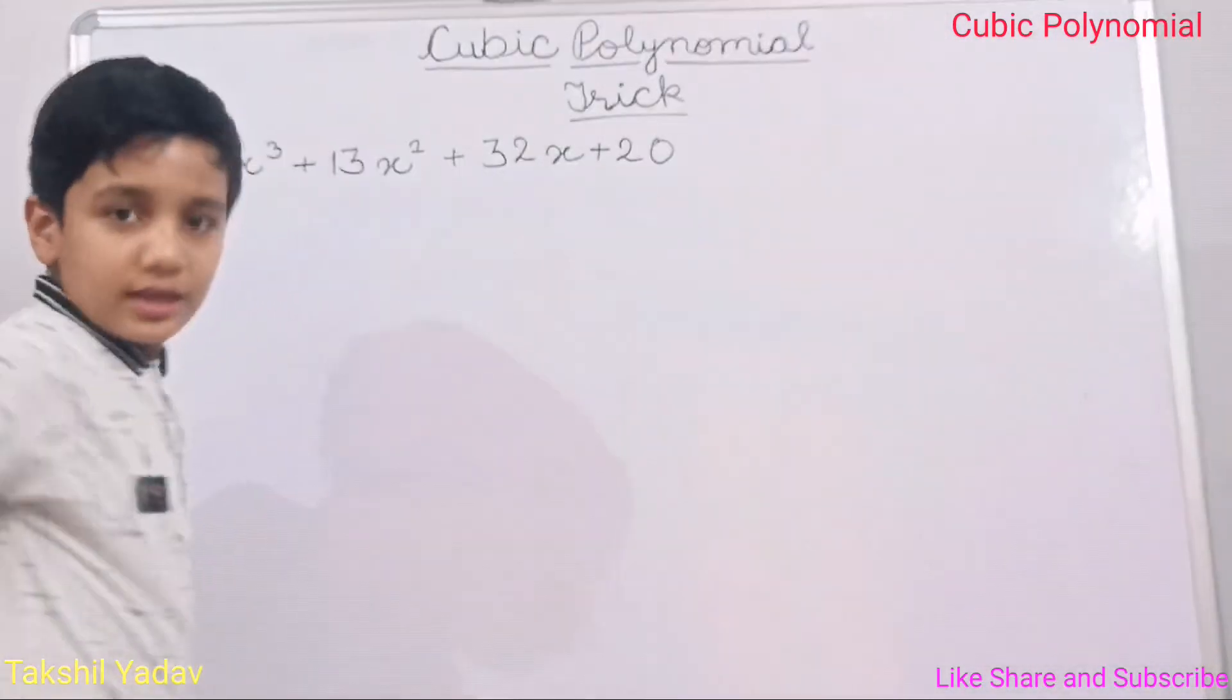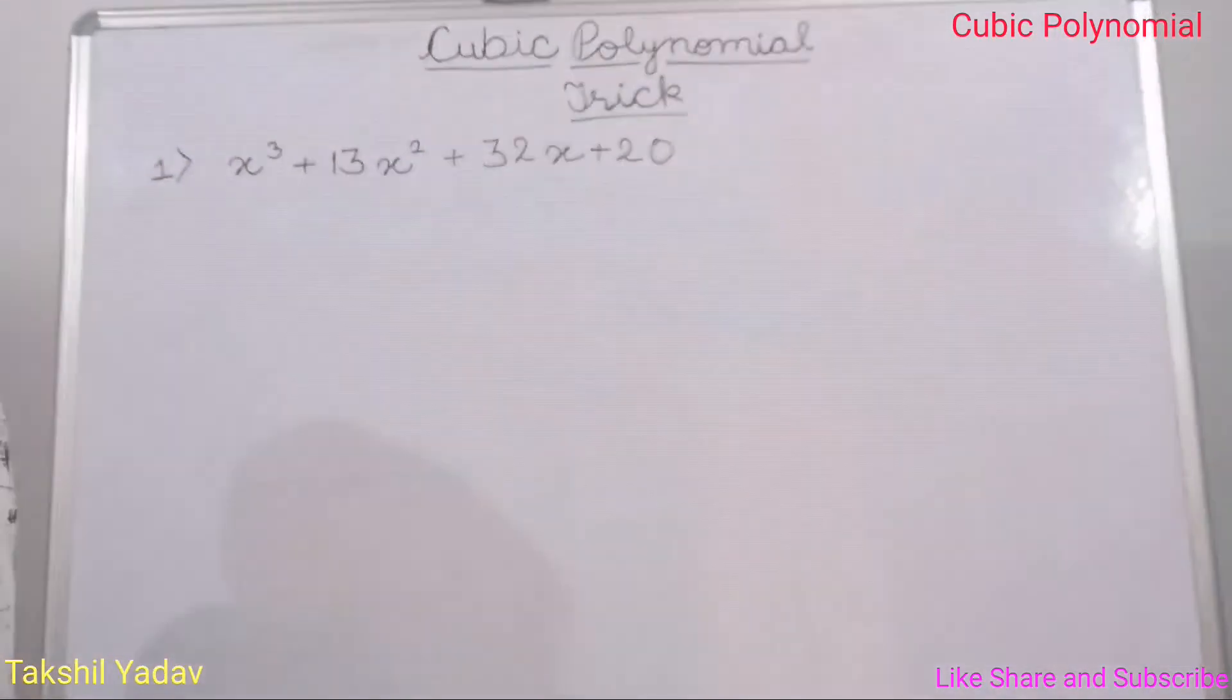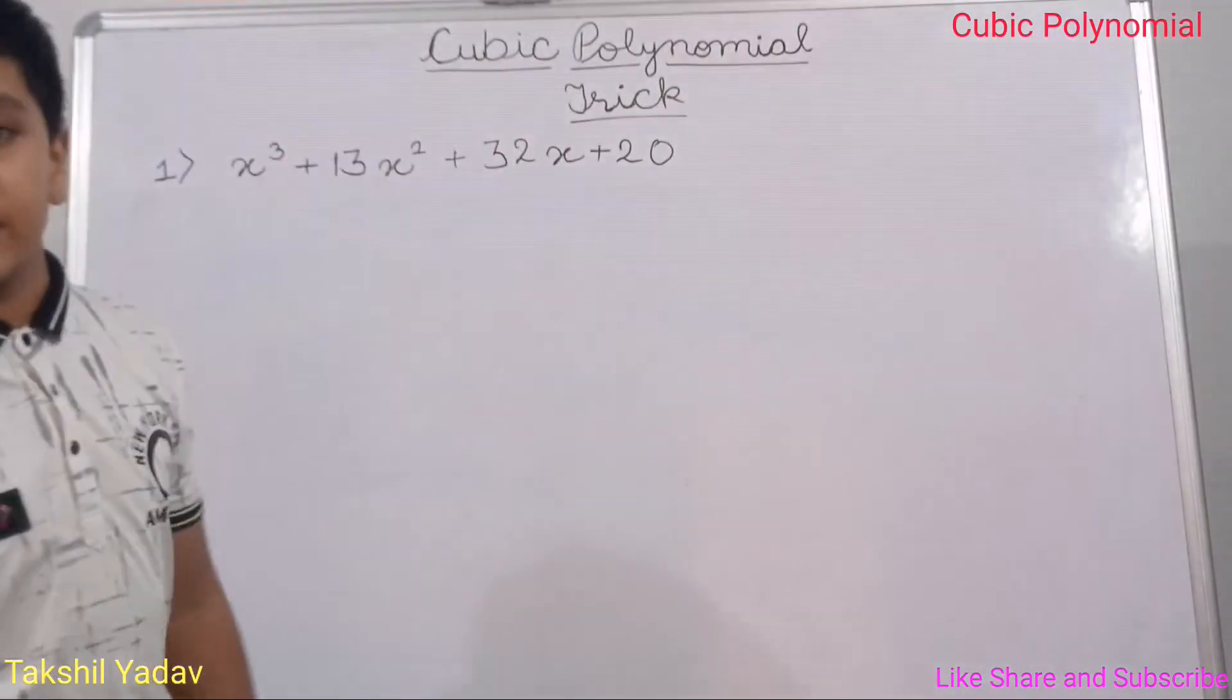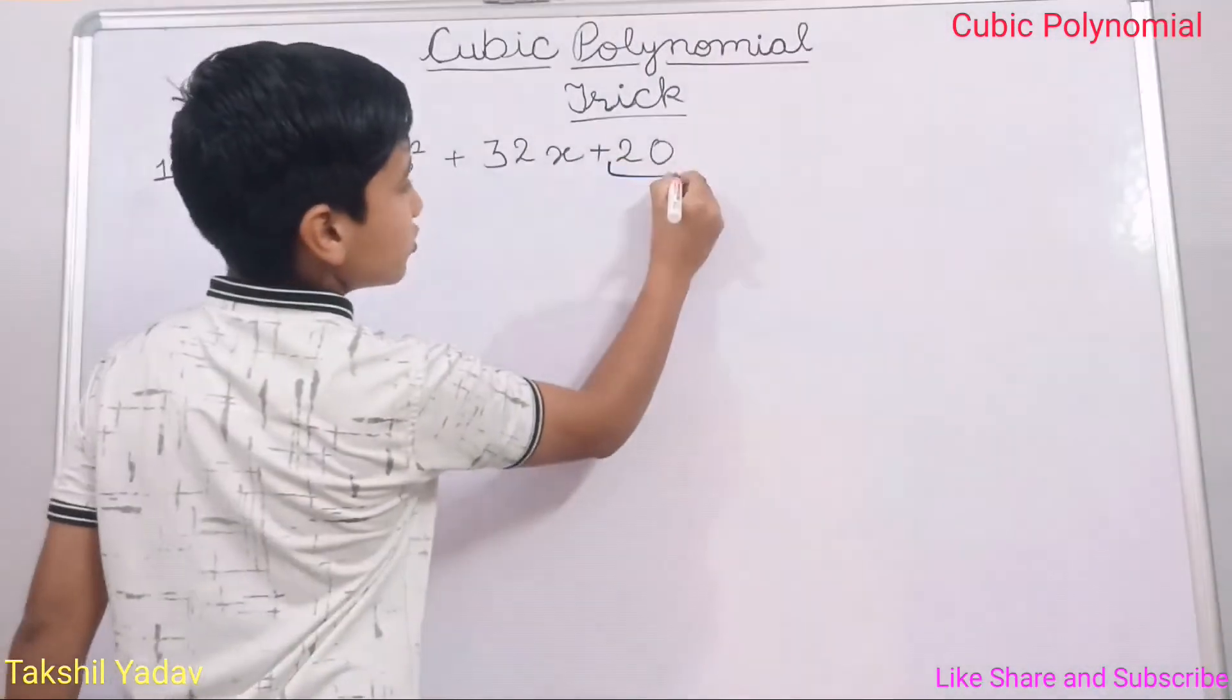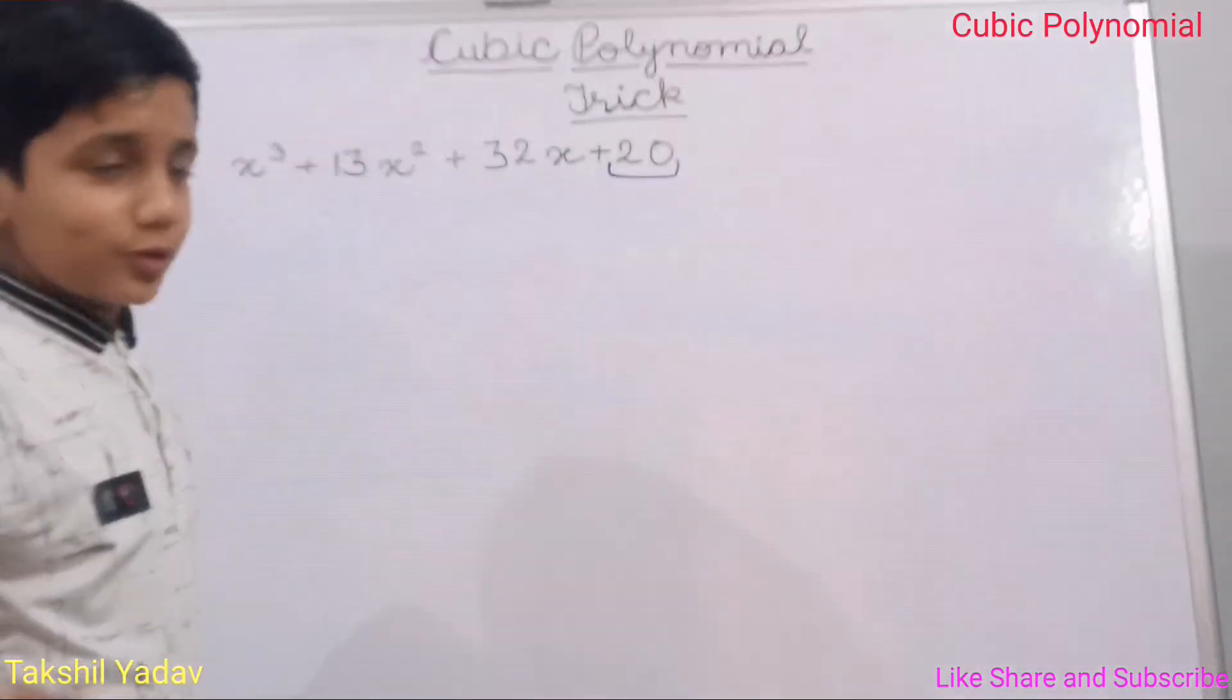This is our first example here. So first of all we will find the first zero with hit and trial method. Take a look at the constant. Here the constant is 20. What are the factors of 20?